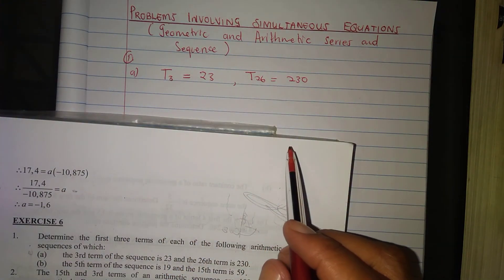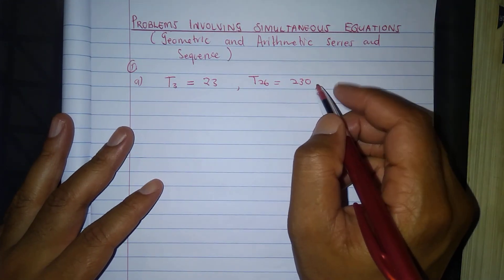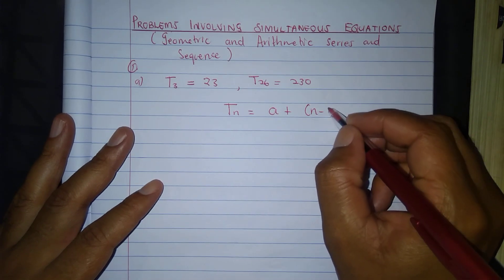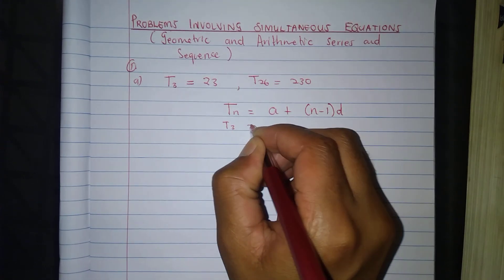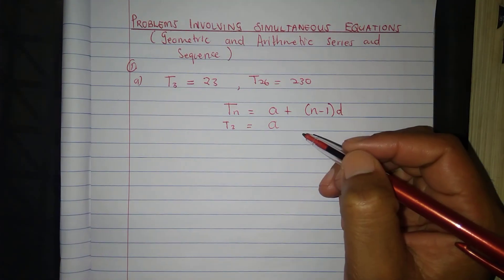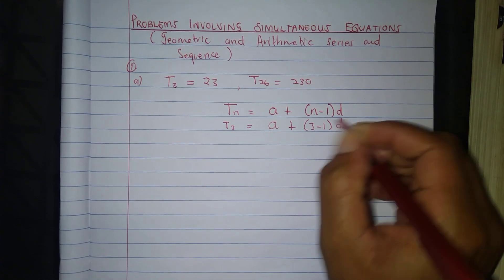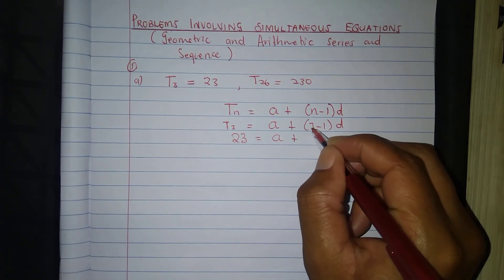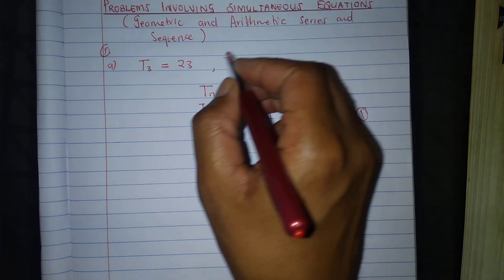We need to find the first 3 terms. I only have the third term, which is 23. So we need to set up an equation. This is an arithmetic sequence. In an arithmetic sequence we use the formula Tn = A + (N-1)D. So T3 = 23 gives us A + 2D = 23. That is my first equation.